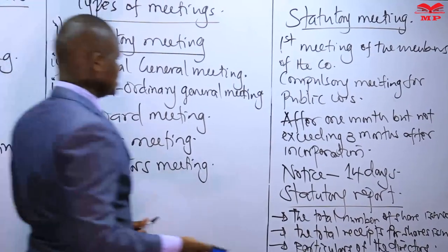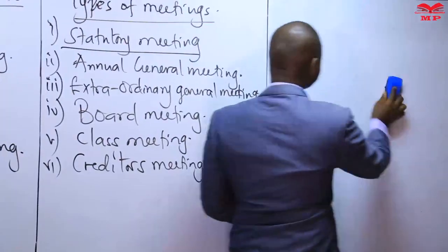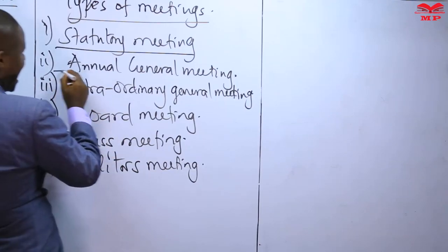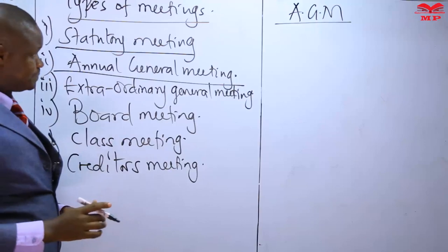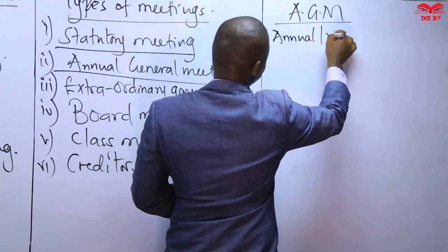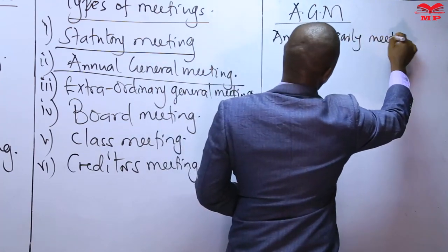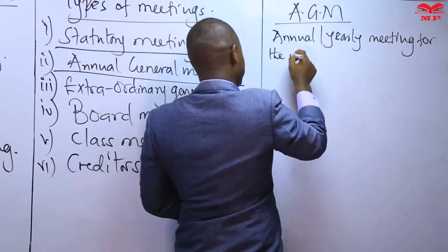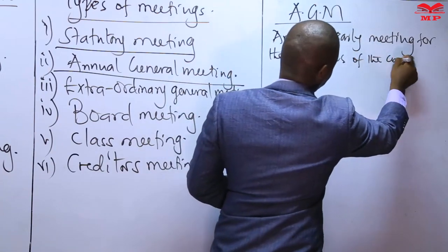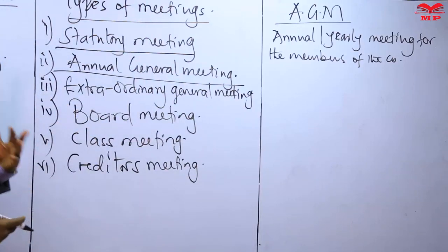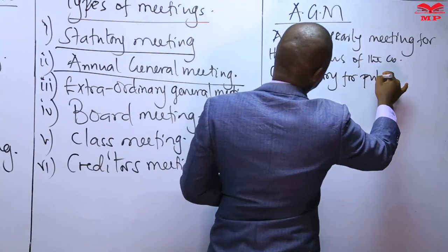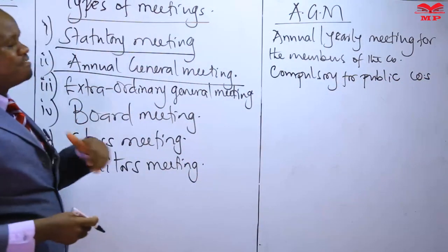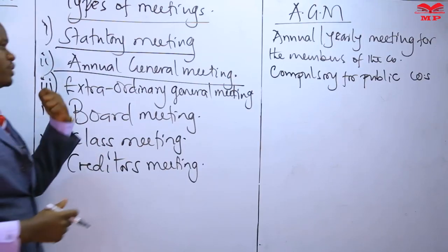The next meeting is the annual general meeting, popularly abbreviated as the AGM. This is a yearly meeting for the members of the company. It is compulsory for public companies — every year, members must meet at the AGM. After formation, the company has up to 18 months to hold its first AGM.